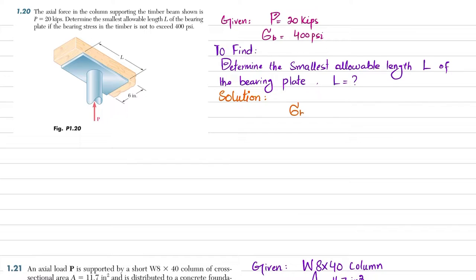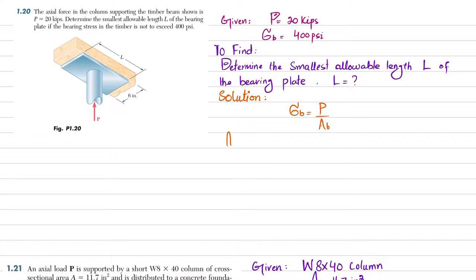We know that bearing stress is equal to load per unit bearing area. The bearing plate is in contact with the timber beam, so the bearing area A_b equals width times l, which is l times 6, giving us A_b = 6l.